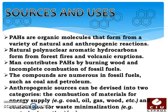Anthropogenic sources can be divided into two categories: the combustion of materials for energy supply — for example, coal, oil, gas, and wood — and combustion for waste minimization.